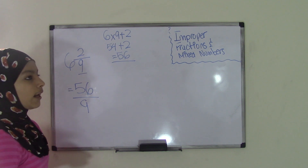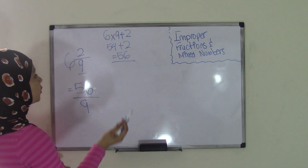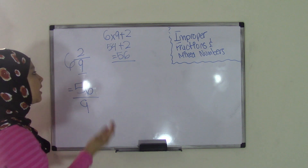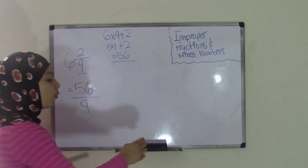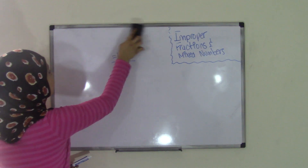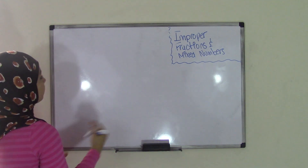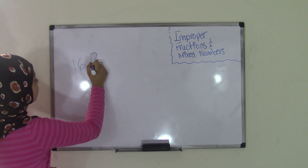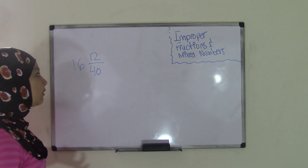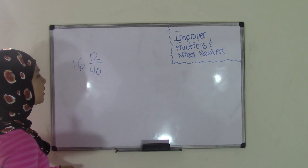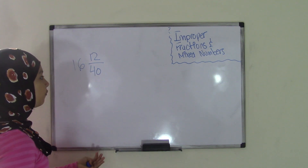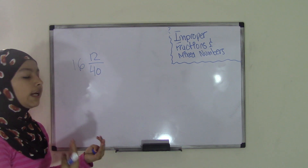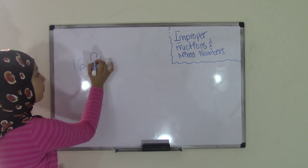Let's try another example converting a mixed number to an improper fraction, but this time with larger numbers. What if we had 16 and 12 over 40? These are some big numbers, and I know it might get a little confusing, but as long as you know the formula, you can do any numbers. The formula is whole number times denominator plus numerator.